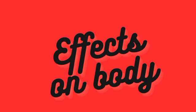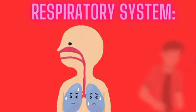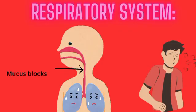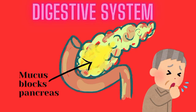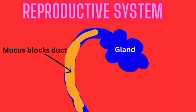Cystic fibrosis affects multiple systems in the body, primarily the respiratory, digestive, and reproductive systems. First, the respiratory system: the thick mucus clogs airways, leading to difficulty breathing and chronic lung infections. Over time, this can cause lung damage and reduce lung function. Second, the digestive system: mucus blocks the pancreas, preventing digestive enzymes from reaching the intestines, resulting in poor nutrient absorption, weight loss, and malnutrition. Third, the reproductive system: in men, CF often leads to infertility due to blockages in the vas deferens. In women, thick cervical mucus can make conception more difficult.